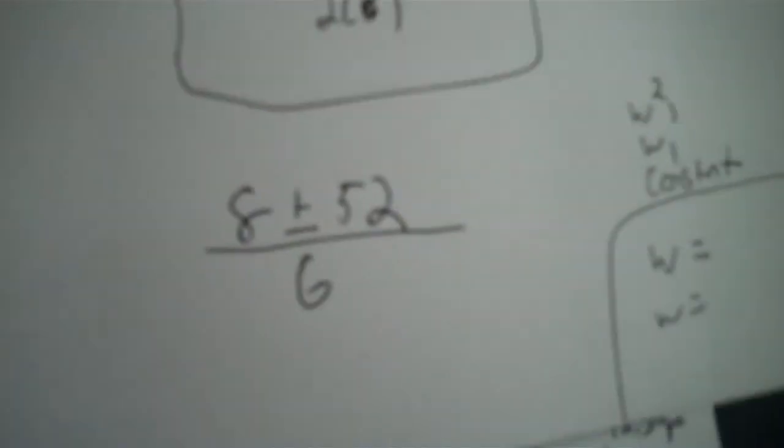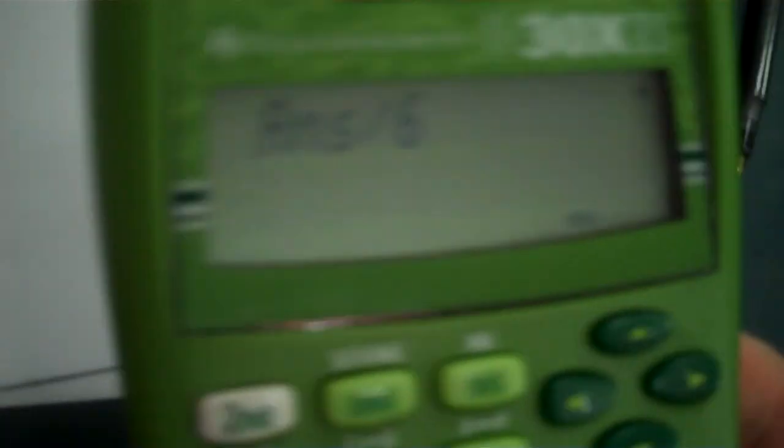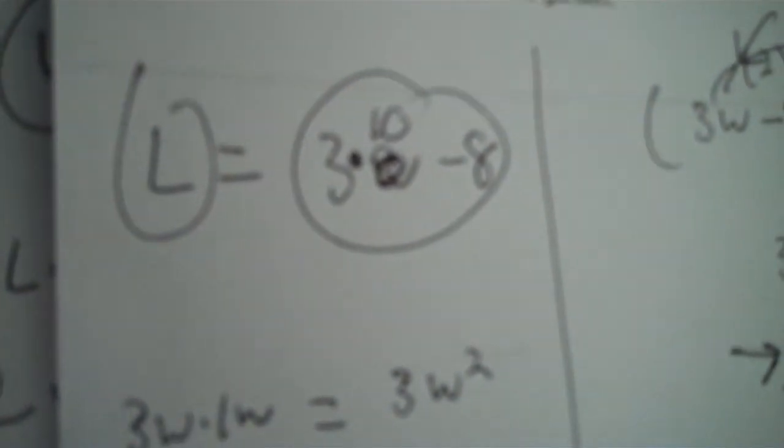Now, that means the T-chart would have worked, but why torture myself? Eight plus 52 divided by 6 is 10. Eight minus 52 divided by 6 is negative 7.33 — we don't care. We want 10. Dimensions can't be negative. So: 3 times 10 is 30, minus 8 is 22. L equals 22. And 22 times 10 is 220 — checks out.